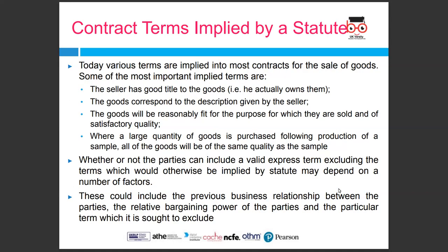Today, various terms are implied into most contracts for the sale of goods. Some of the most important are: the seller has good title to the goods; the goods correspond to the description given by the seller; the goods will be reasonably fit for the purpose for which they are sold and of satisfactory quality; and where a large quantity of goods is purchased following production of a sample, all goods will be of the same quality as the sample. Whether parties can include a valid express term excluding these implied statutory terms may depend on factors such as the previous business relationship between the parties and the relative bargaining power of the parties.